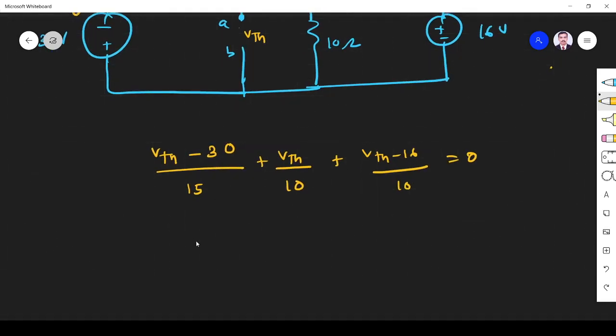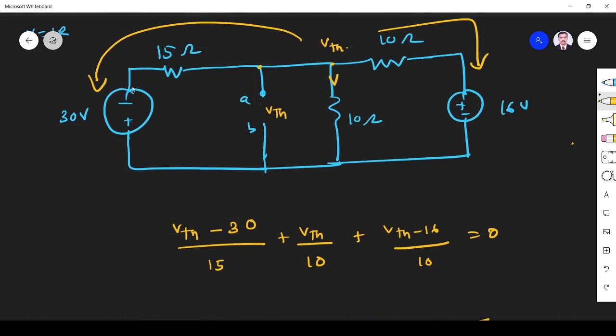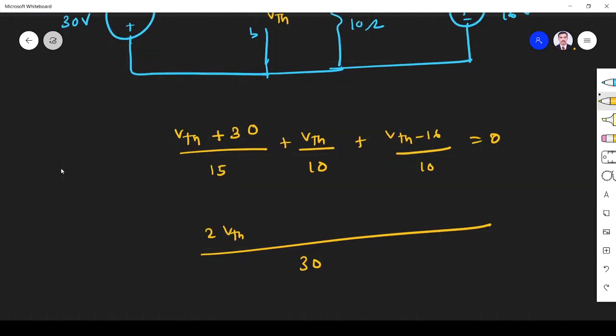Then LCM 30, so 2 V Thevenin... Sorry, here you see this is minus, so it is V Thevenin plus 30, okay? 2 V Thevenin plus 60 is 3 V Thevenin plus 3 V Thevenin minus 48 equals zero.